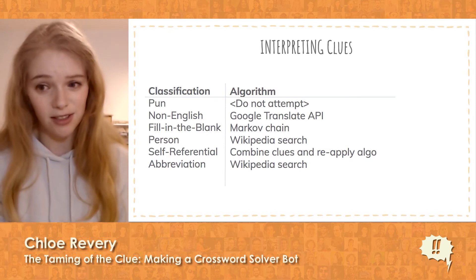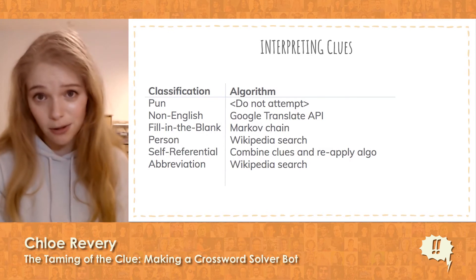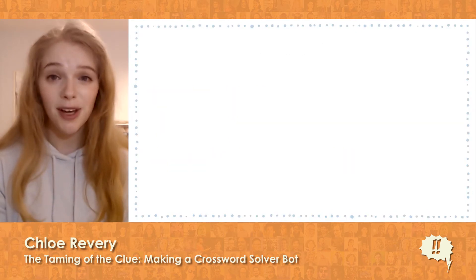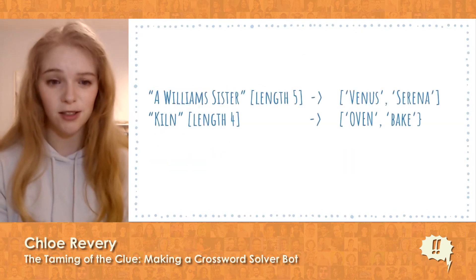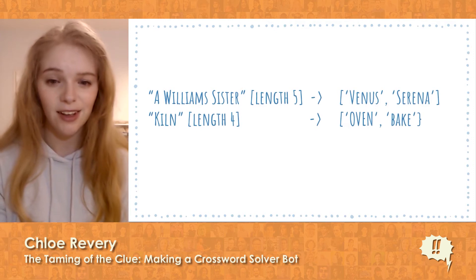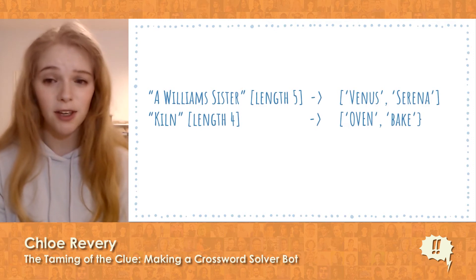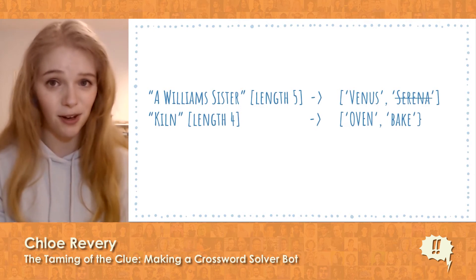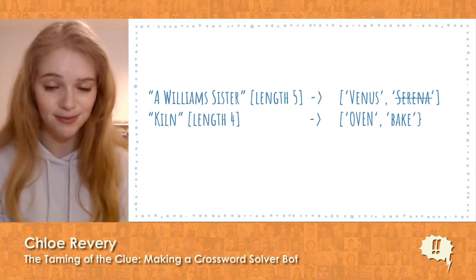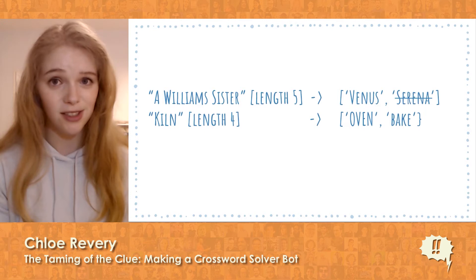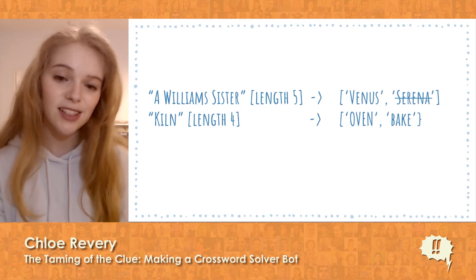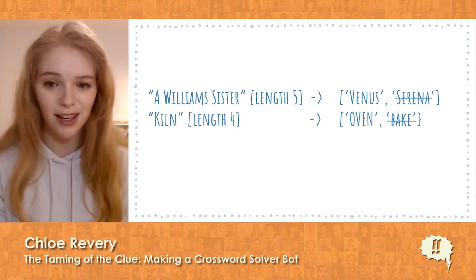Now that we've generated possible answers for every clue, we can use what we already know to winnow down our answer set. So imagine that we have these possible answers for these clues of this length. First, we can remove all the answers that aren't the exact right length for the clue — so goodbye Serena, which is not five characters. Next, we discard the answers that don't fit with the 30% of the grid we already know. Let's imagine that that disqualifies 'bake.'